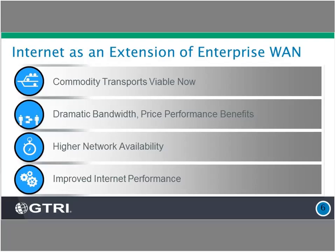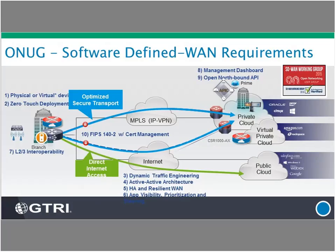Some of the drivers for SD-WAN: a big one is that commodity transports such as the internet are now viable. Where before, internet availability would not be what we consider enterprise grade, we're now seeing availability of internet circuits in the 98 to 99 percent range. In addition to that, with commodity internet bandwidth, we're seeing dramatically more performance per cost versus traditional IP services such as MPLS or dark fiber lines. This definition and diagram come from the Open Network User Group, showing what the different components of an SD-WAN solution are.